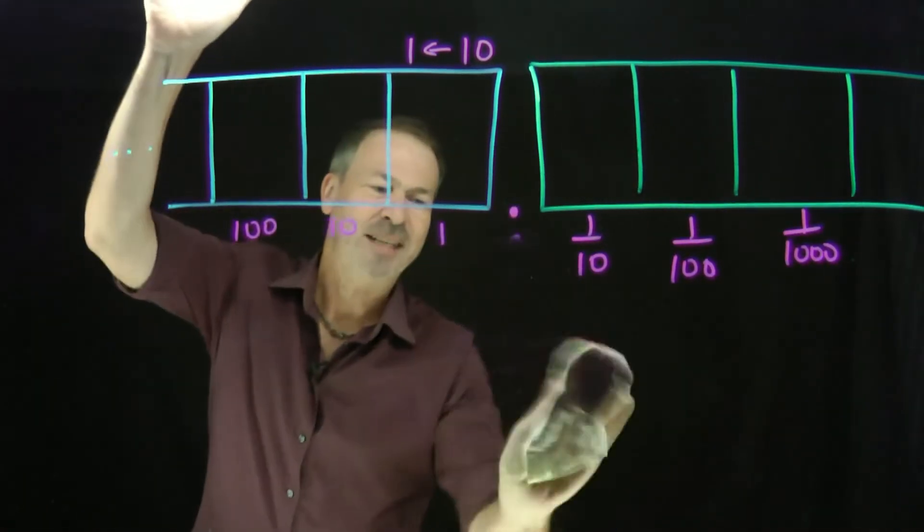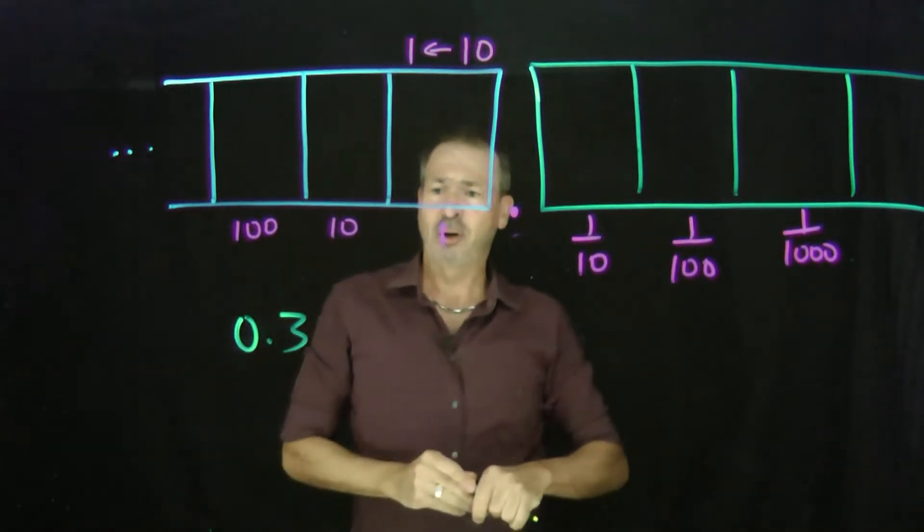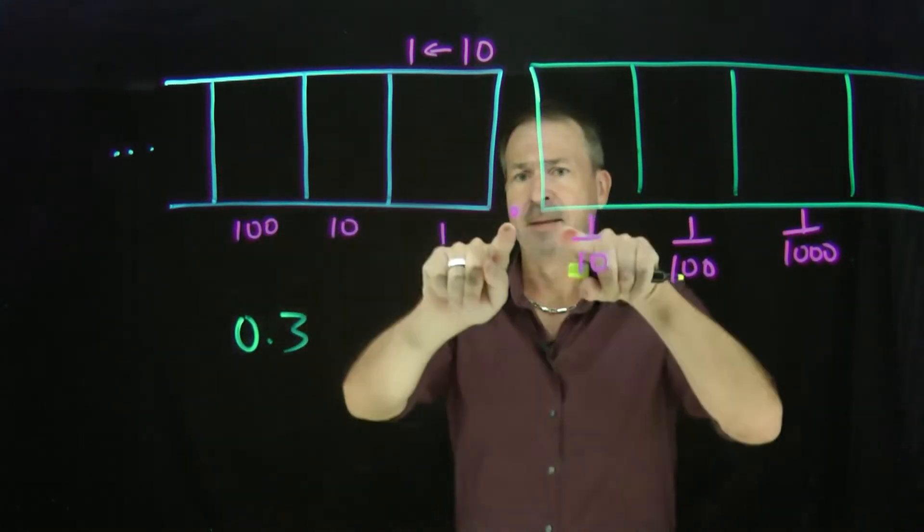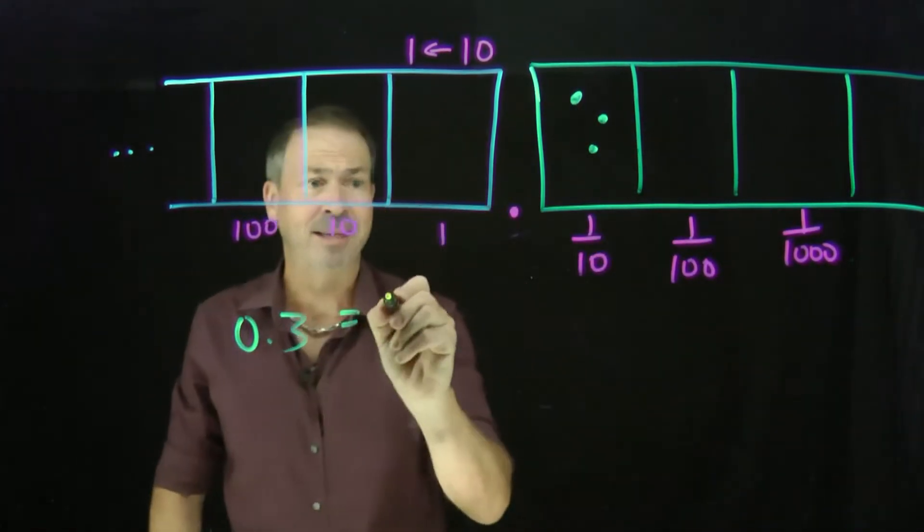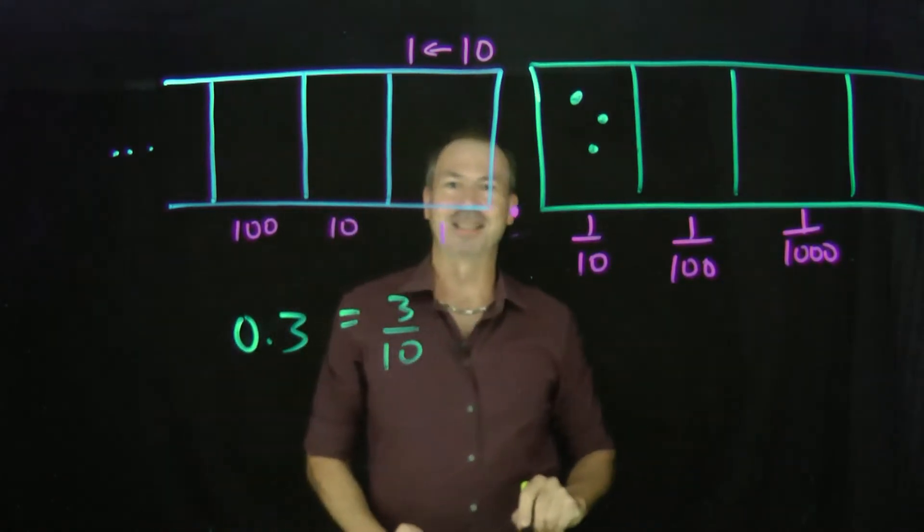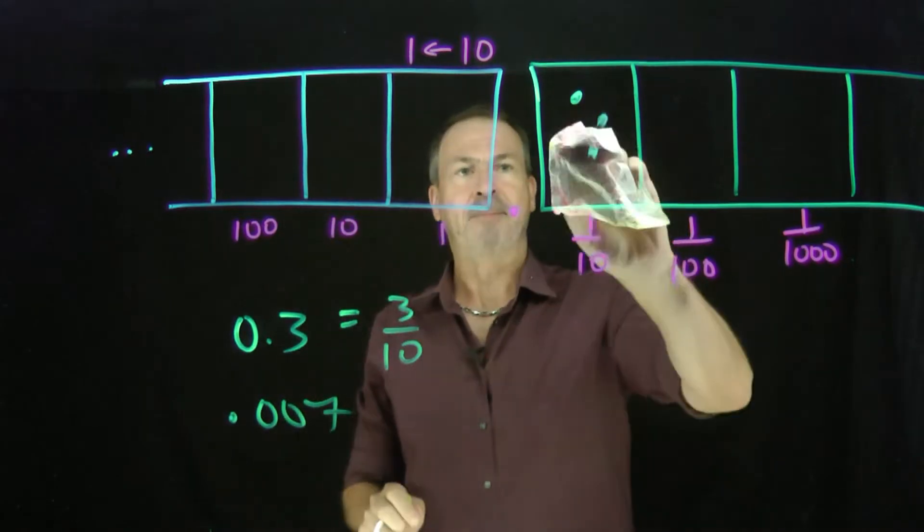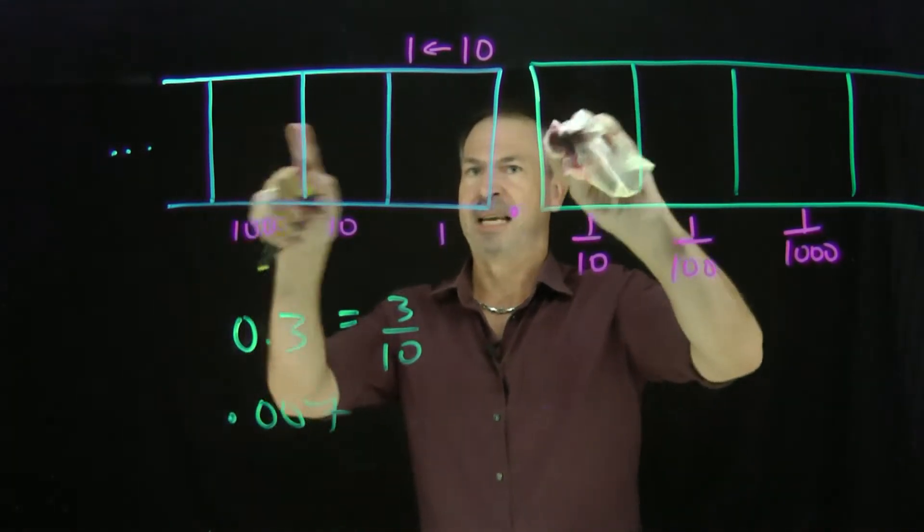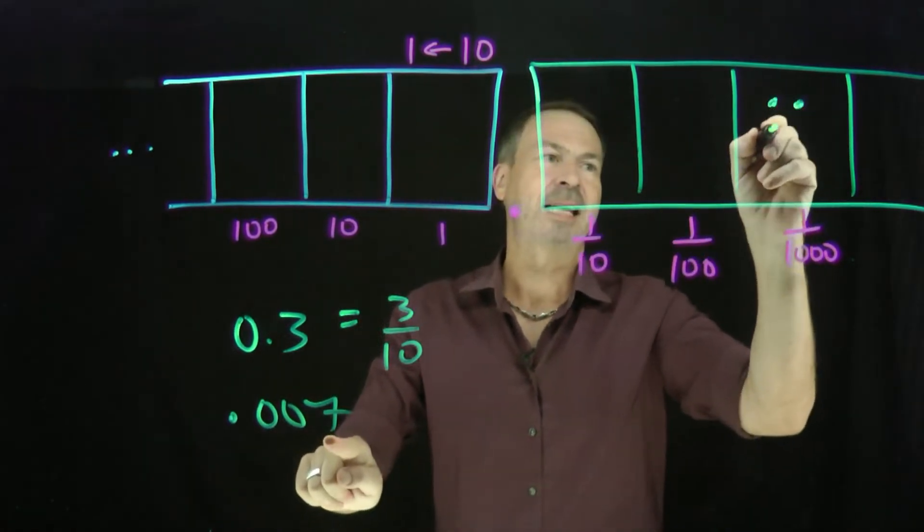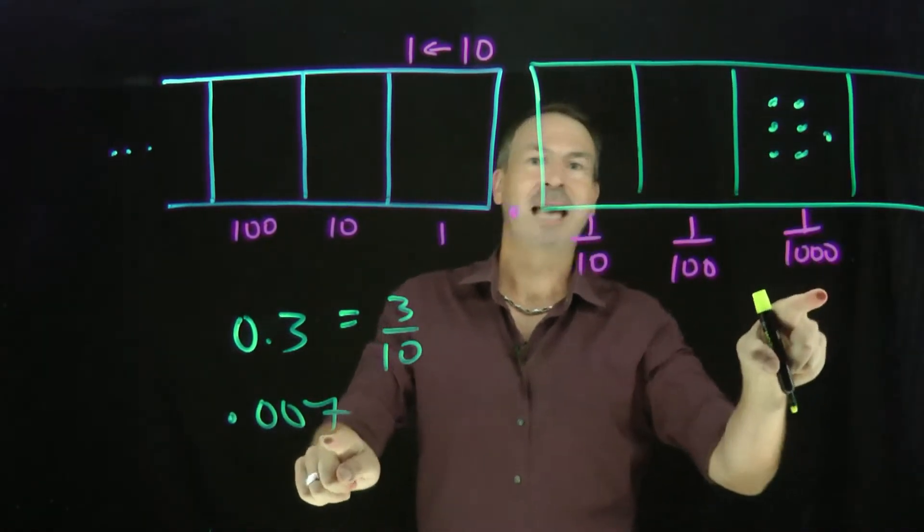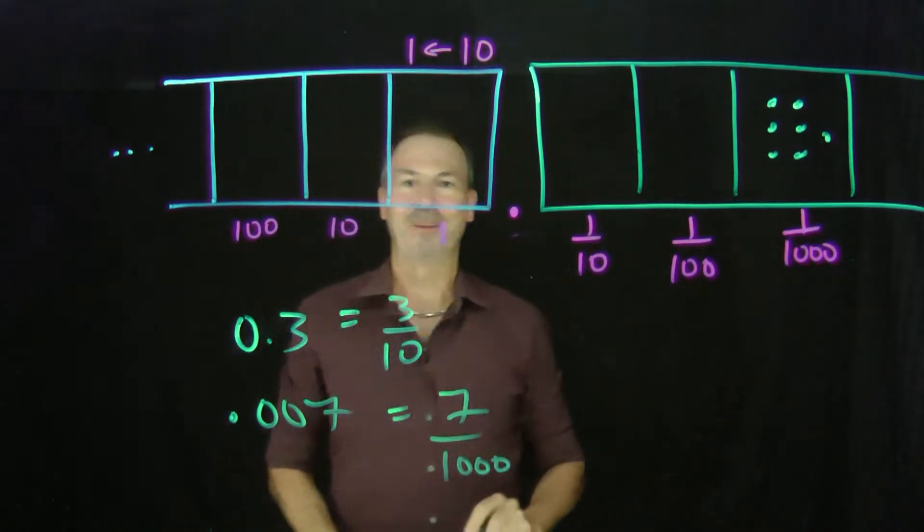Great! So for example, if I write the decimal 0.3, that literally means nothing here. There's my point, and then 3 things here. 3 tenths. Oh! It literally means 3 tenths. There it is. Well, if I write 0.007, what does that mean? It means I've got nothing to the left of the decimal point, nothing over here. But I've got nothing here as well, nothing here as well, but I've got 7 things here. That is 7 dots at the thousandths level. This is actually 7 one-thousandths. There we go. Great!